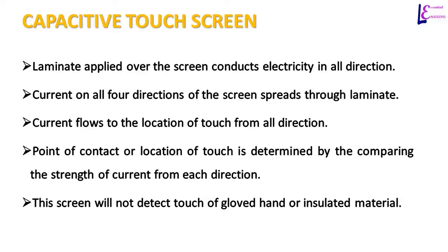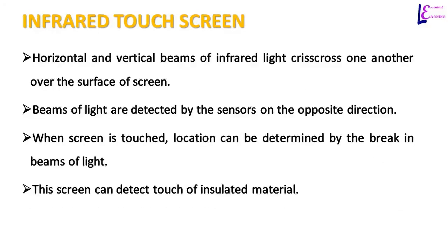Capacitive touch screens have a laminate applied over the surface that conducts electricity in all directions. Current spreads through the laminate in all four directions of the screen. Current flows to the location of touch from all directions, and the location of touch is determined by comparing the strength of current from each direction. This screen will not detect touch of a gloved hand or insulated material.